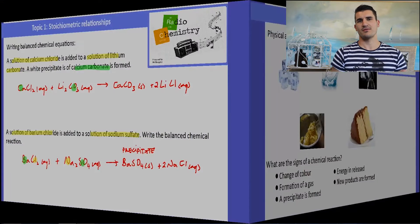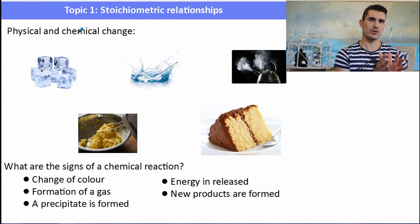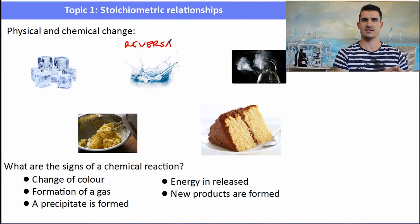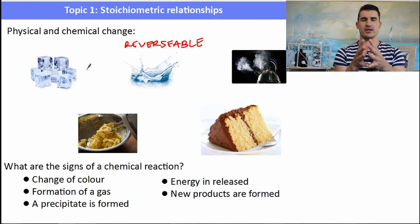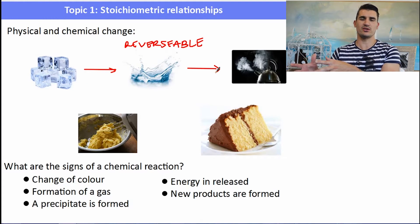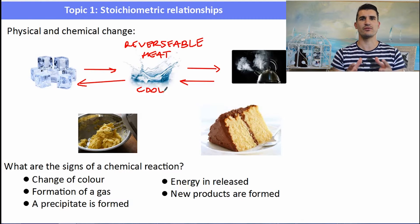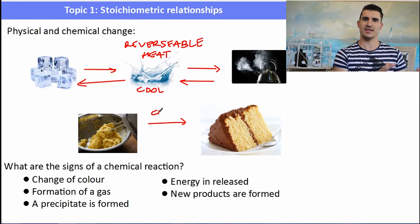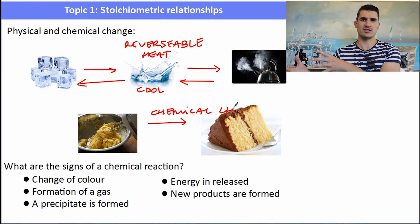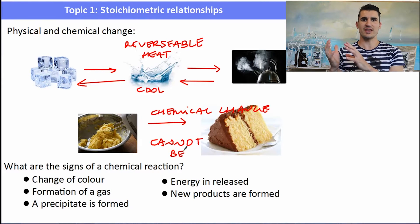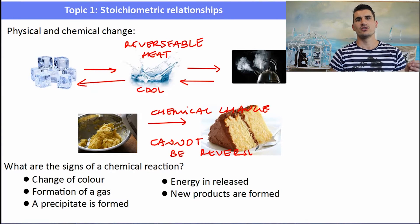A physical change is reversible — whatever we do to the substance, we can reverse it. For example, ice is water that has been frozen. Heating it gives liquid water; heating further gives steam. If we collect the steam and cool it, we can turn it back to ice — that's a reversible change. A chemical reaction is a non-reversible change. For instance, once cake ingredients are baked in an oven, we can't get the eggs, flour, and sugar back — that's a chemical change.